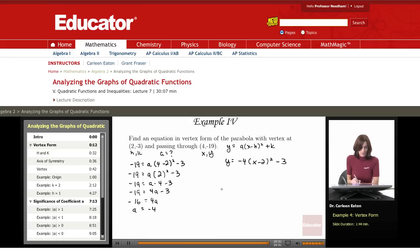So here I have the vertex form. I know the vertex is 2, negative 3, and now I know that a equals negative 4. So this is going to be a parabola that opens downward.